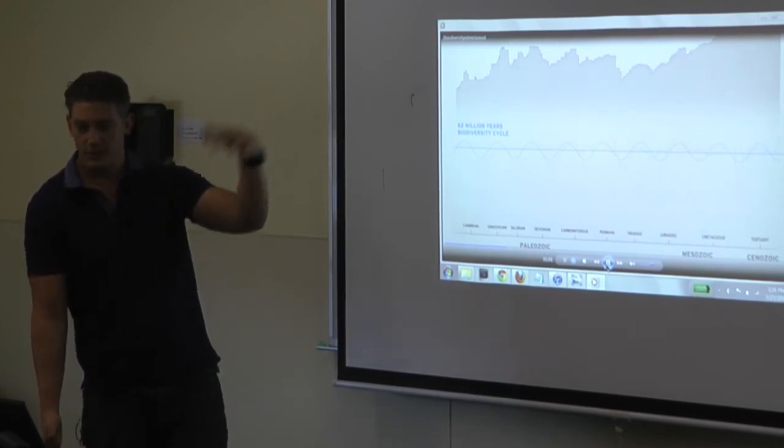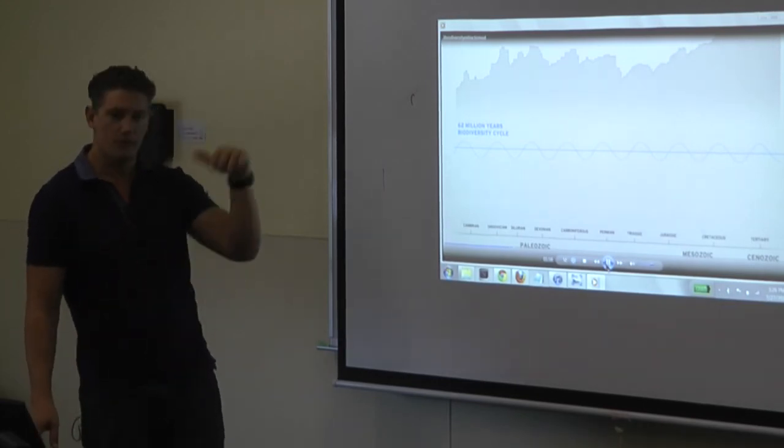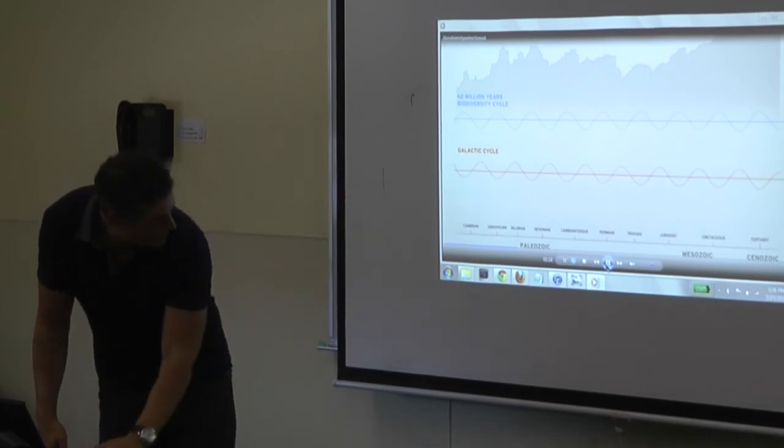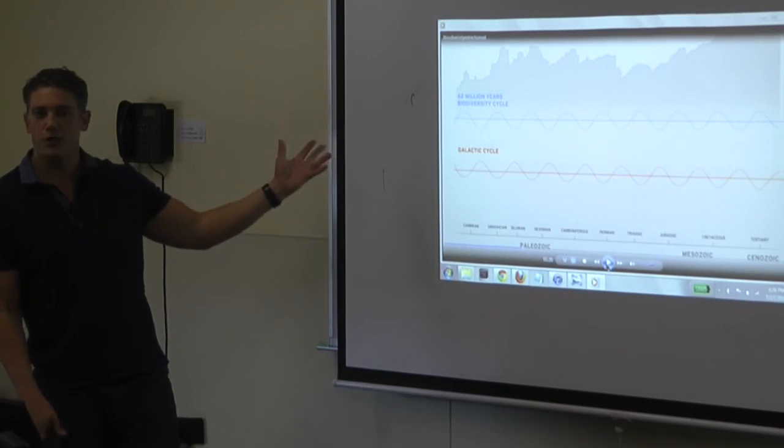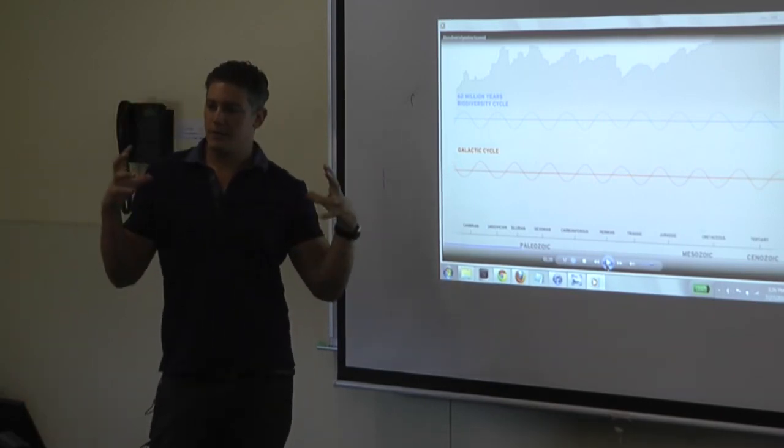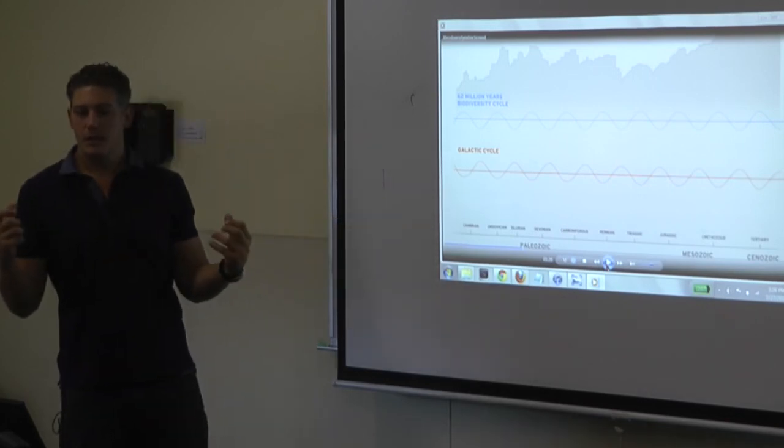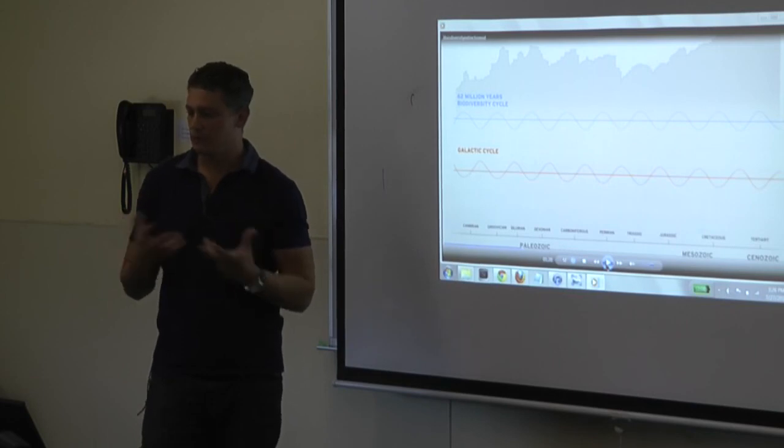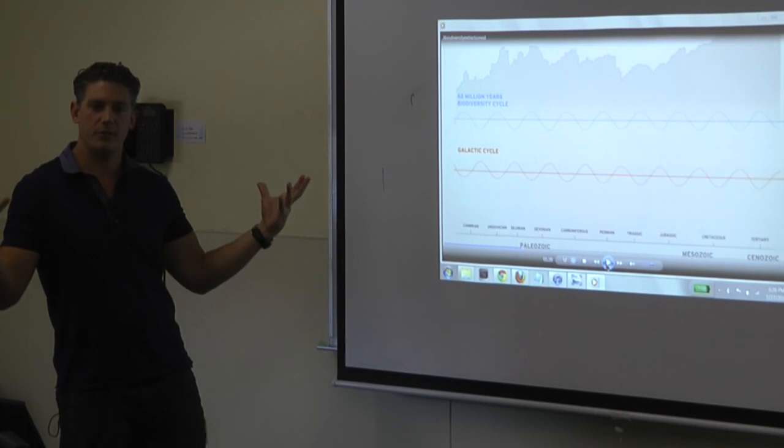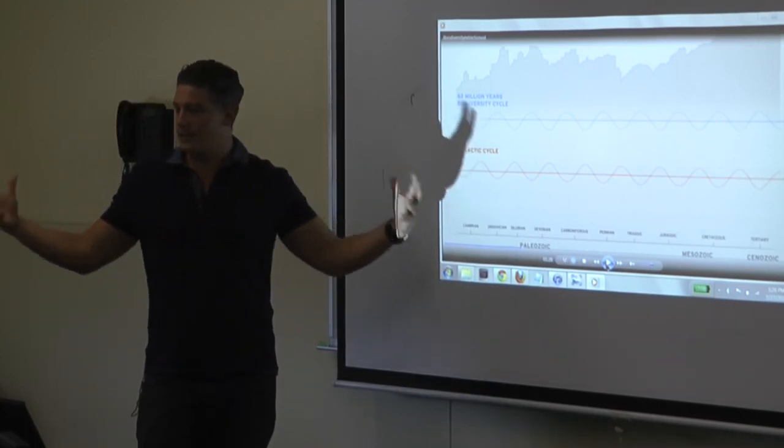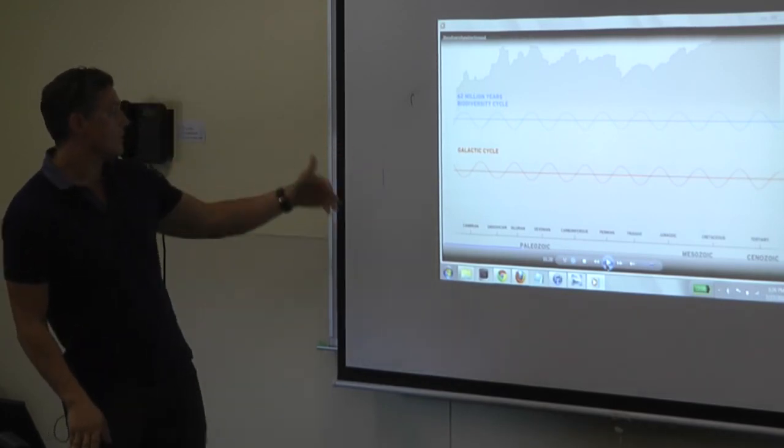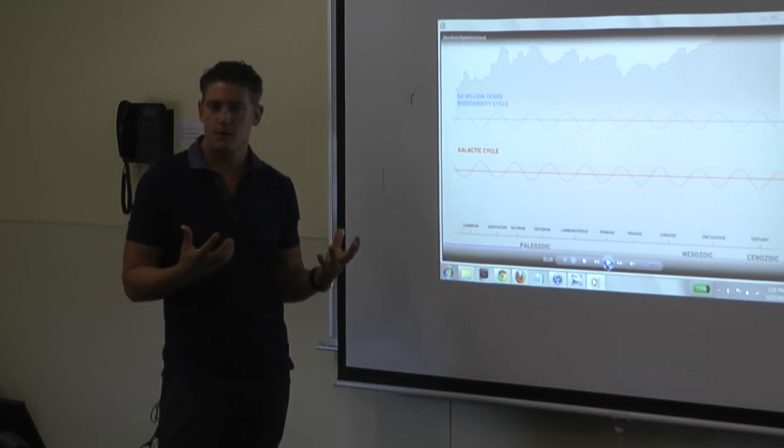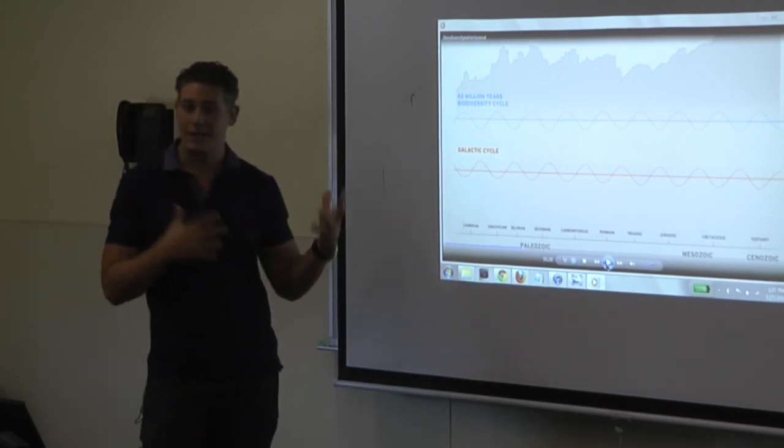So every 62 million years, we go through some cycle of rise and fall of biodiversity. New species are coming into existence, other ones are dying off, and the total number kind of rises and falls in this cyclical type of fashion. Are you curious about what's so special about 62 million years? That's what we're going to get into right now. That became the question, because that's a large cycle, and you have to think something of that scope wouldn't have an internal driver to it. There's nothing internal to the planet which seems to have a 62 million year cycle to it.